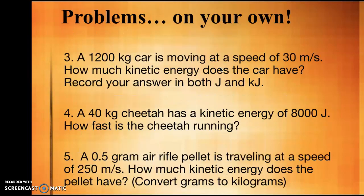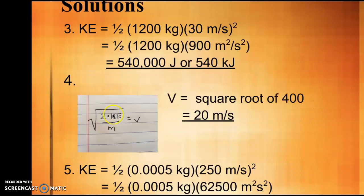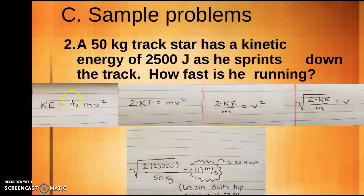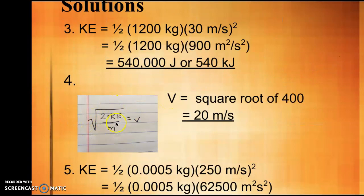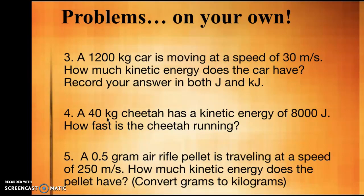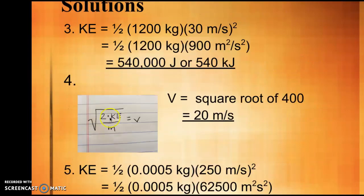The next one asks for the speed of a cheetah, giving you the kinetic energy and the mass. You can go back to see those steps. This is our final equation, so two times his kinetic energy, which I think was 8,000, divide by his mass of 40. And you need to take the square root of that number. Square root of 400 is what it should be, lands us at 20 meters per second. So that cheetah is going pretty fast.